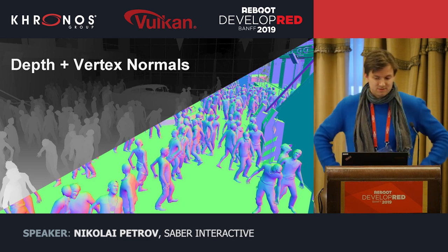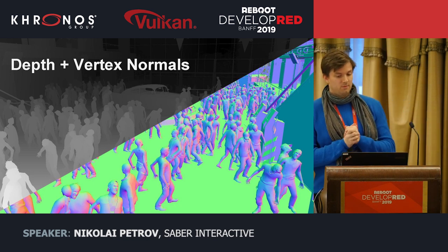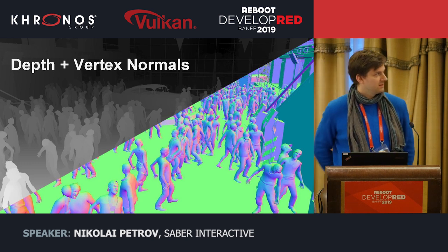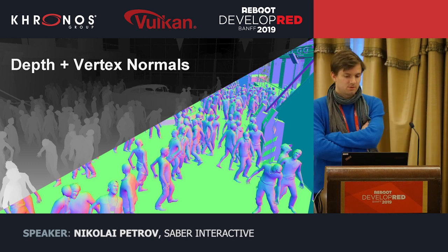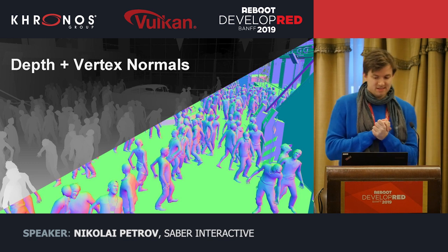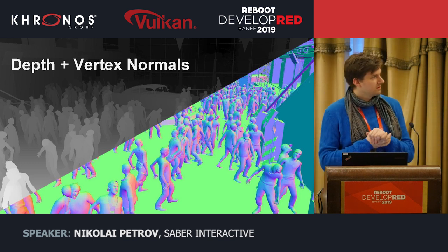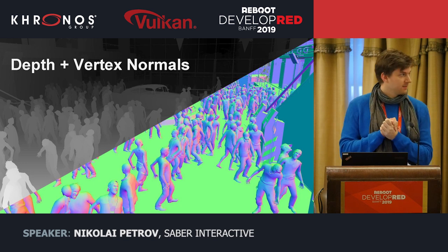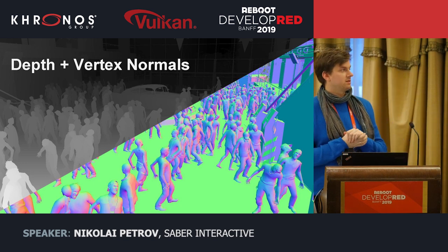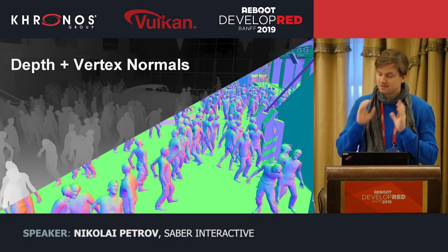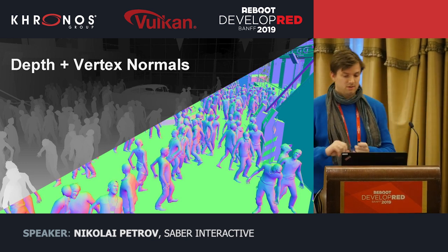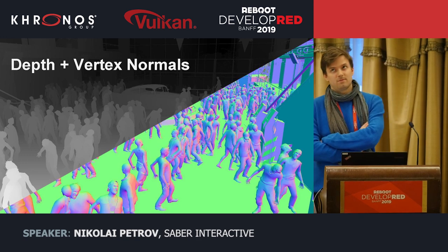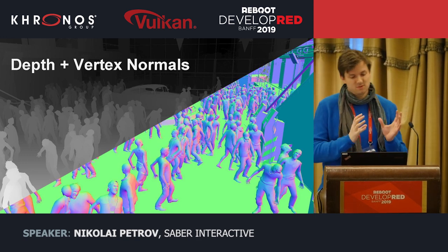At the start of every frame, we do the Z-pass. We render objects in front-to-back order to fully utilize the Hi-Z GPU culling. Besides depth, we also store world-space vertex normals. This path is almost stateless — it doesn't use any additional textures, unnecessary vertex streams, or constant buffers. It has been designed to be very fast on both CPU and GPU sides.